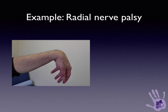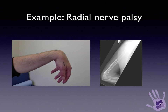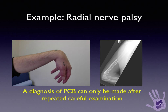Let's apply this to a radial nerve palsy. An important point: neuropraxia is not a diagnosis of a peripheral nerve injury. Using the term neuropraxia implies full recovery is anticipated, giving false reassurance to surgeon and patient, and may result in delayed referral and intervention, leading to a worse prognosis. For instance, where a patient has had internal fixation of a distal humerus fracture and wakes up with a radial nerve palsy, a diagnosis of prolonged conduction block — previously termed neuropraxia — can only be made after repeated careful examination. I stress the word repeated, and I'll explain why.